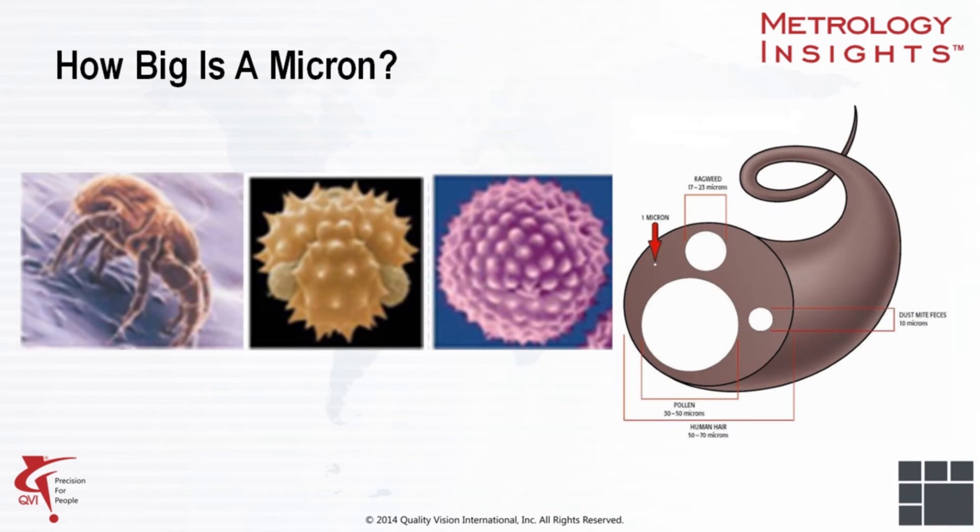Dust mites are 250 microns, ordinary office paper is 100 microns thick, human hair 50 to 90 microns, pollen 30 to 50 microns, and staphylococcus 1 micron. To put these dimensions into perspective, 1000 microns is just one millimeter.